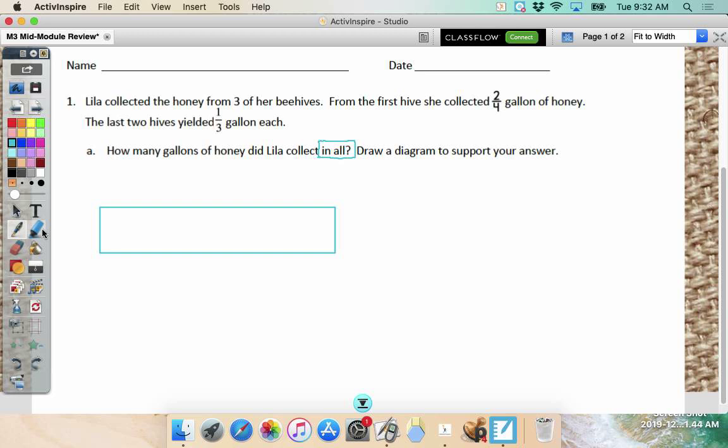Now go ahead and draw a tape diagram, and then we're going to talk about what to put on it. First of all, do I have a total? No. So that's my question mark. I've got to figure out my total. So you know what we're going to do. What are we going to do? Add. I have how many beehives? Three. So I need three parts to my tape diagram. From the first hive, she collected two-fourths. Good. And then the last two hives yielded one-third gallon each.